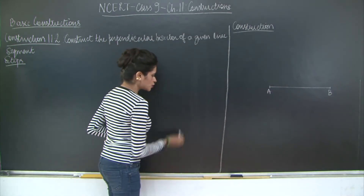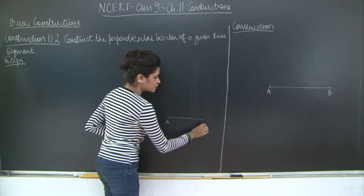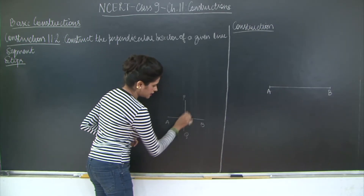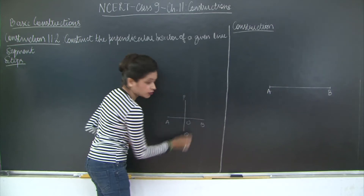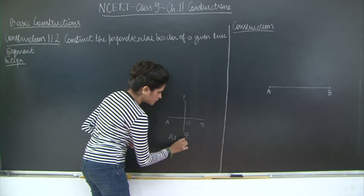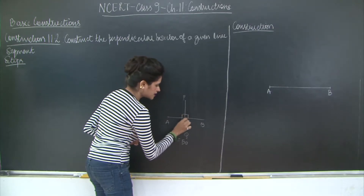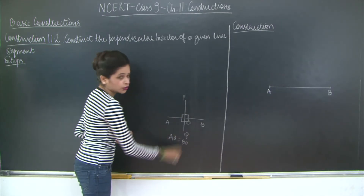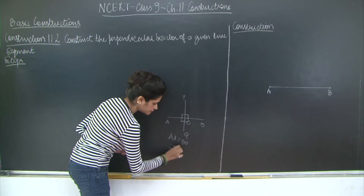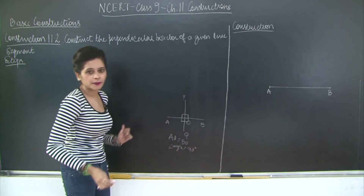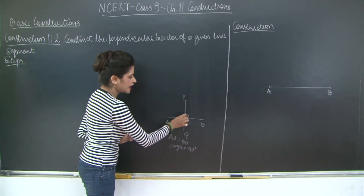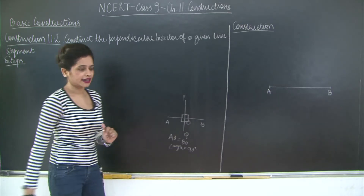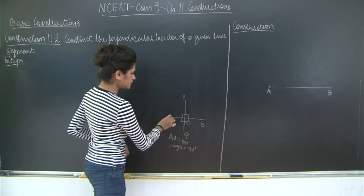So if this is your line segment AB, you need to draw a perpendicular bisector PQ such that PQ and AB intersect at point O, where AO is equal to BO, and each angle — angle POA, angle POB, angle BOQ, and angle AOQ — is 90 degrees. That's why it's called a perpendicular bisector: the point of intersection is perpendicular, and the bisecting line bisects the given line segment AB.